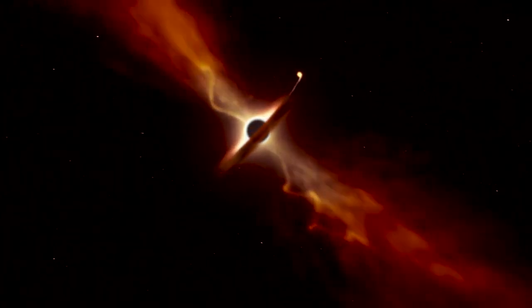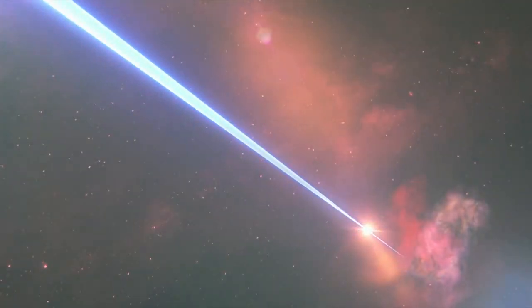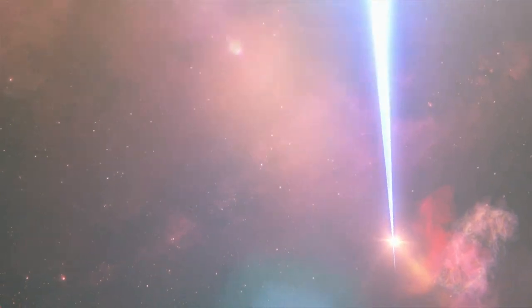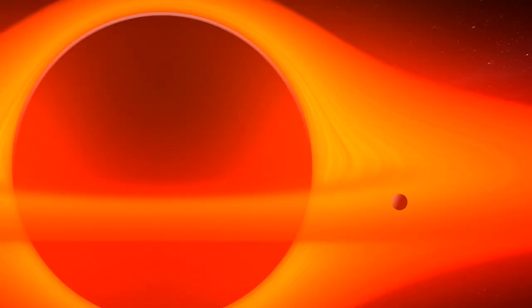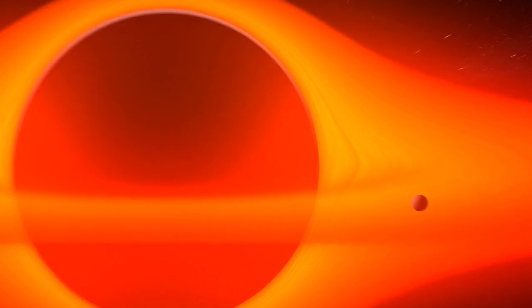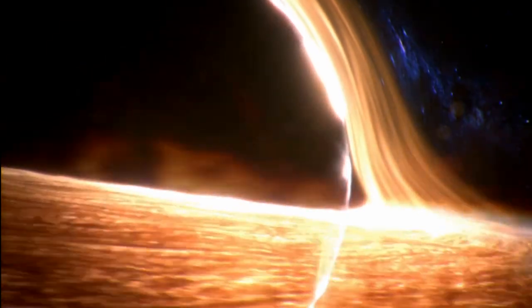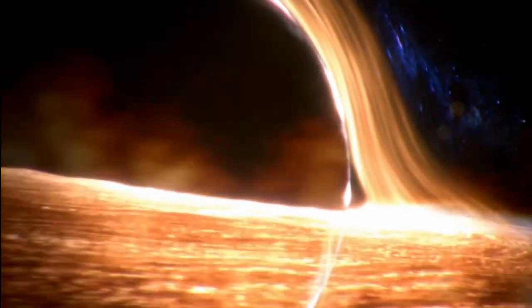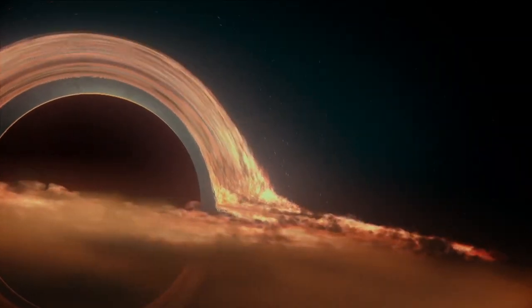When one of these high-energy jets points right at Earth, it is called a blazer which is visible from millions or even billions of light-years away. Although it is certain in the early days of the universe, black holes feasted on vast amounts of interstellar dust, allowing blazers to outshine even the brightest ancient stars. Yet, these cosmic supermen are shrouded in mystery, leaving scientists puzzled about their inner workings and the source of their extraordinary energy jets.